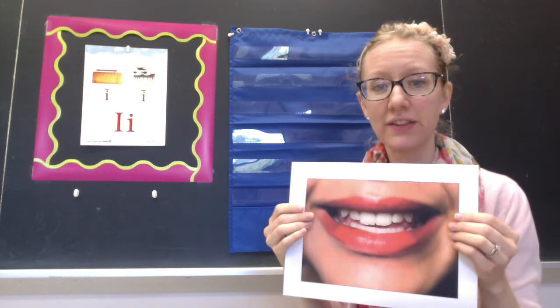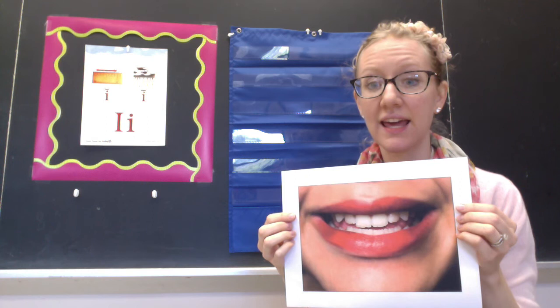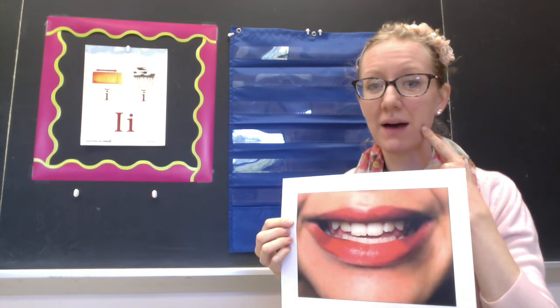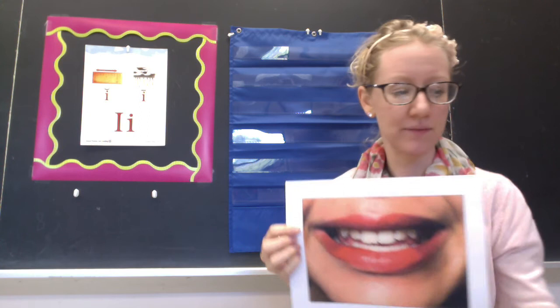To make this sound, you smile. Your mouth is slightly open and your tongue is a little lowered. It sounds like this: I, I, I. Listen one more time. I'm smiling. My mouth is open a little bit and my tongue is a little lowered. I, I, I.